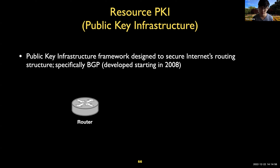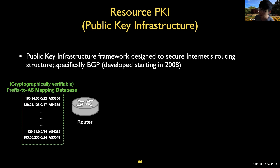Let me briefly recap, at a very high level, how RPKI works. RPKI is a public key infrastructure framework designed to secure internet routing structures, especially for BGP. At a high level, it helps routers construct a kind of verifiable mapping database so that it can filter BGP announcements which turn out to be invalid.